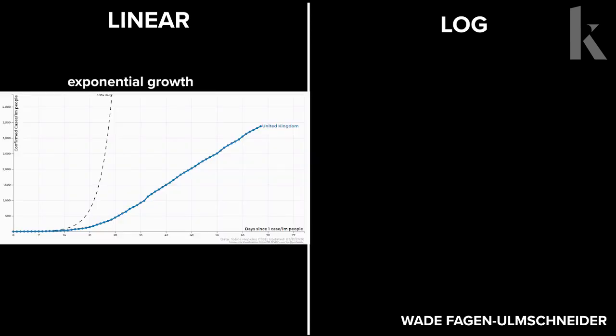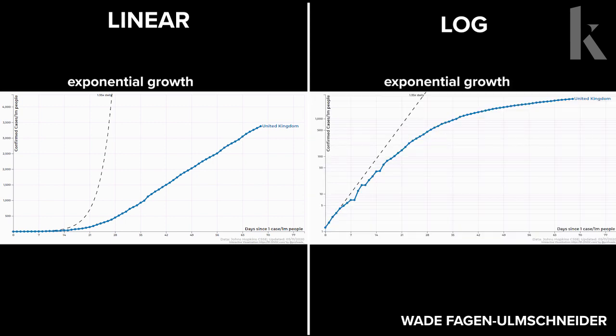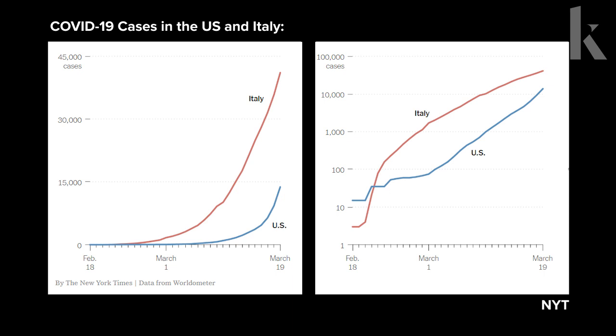In the linear scale, exponential growth is U-shaped, represented by a dotted line that shows if cases increase 1.3-fold every day. But in log scale, it becomes a straight line, which makes it much easier to see when the data deviates from this alarming growth. The difference can be seen in this graphic from the New York Times, which plots the same data — COVID-19 cases in the U.S. and Italy — in both linear and log scale.